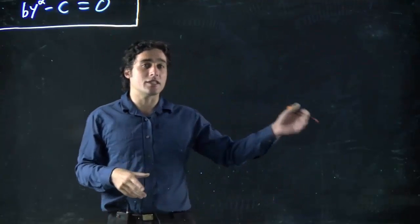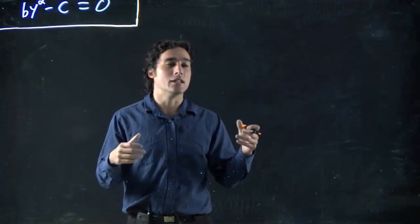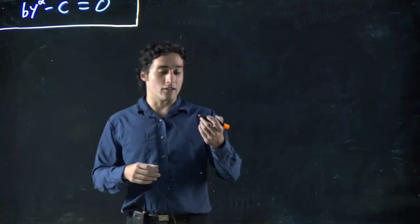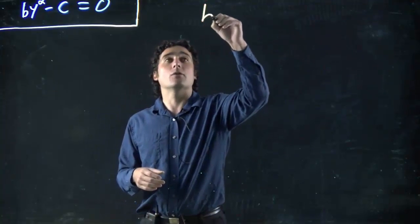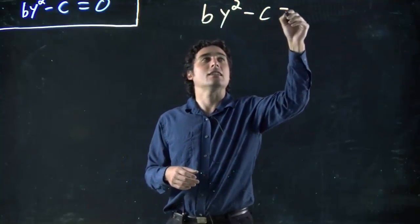So we could still use the same idea of what multiplies to give us c and adds to give us b, just adding to give 0. But anyway, let's take a look at this equation. What do we got? I'm doing a general one, so it's by squared minus c equals 0.